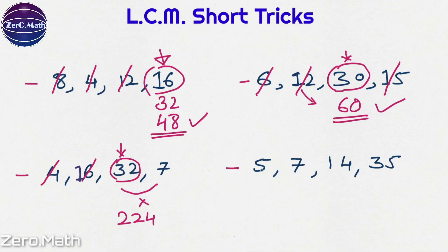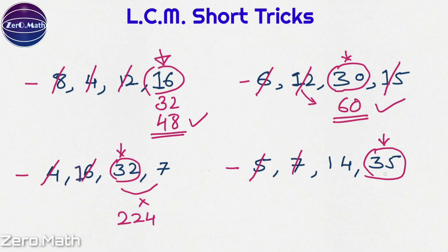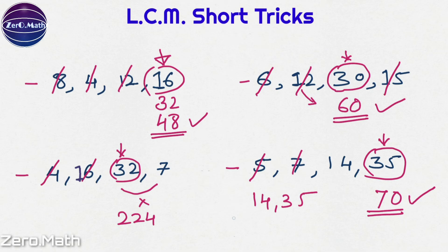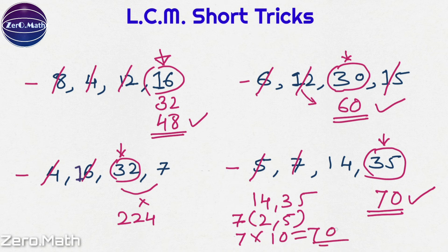Let us figure out the next one: 5, 7, 14, and 35. You can see there is a prime number, but do not get confused. The first rule is to identify the biggest number, which is 35. This 35 is completely divisible by 7 as well as 5 — so 7 and 5 are out of the picture. Now find the LCM of 14 and 35: write the table of 35. 35 × 2 = 70. Is 70 divisible by 14? Yes — so the answer is 70. Alternatively, 14 and 35 share a common factor of 7, giving 7 × 2 × 5 = 70. This is another way to find the answer.